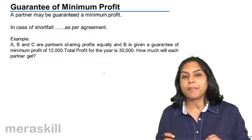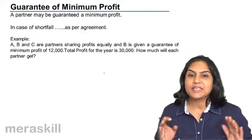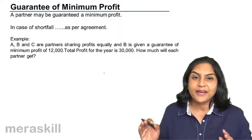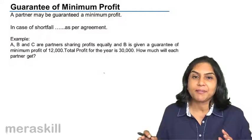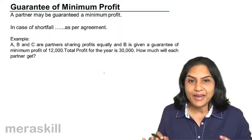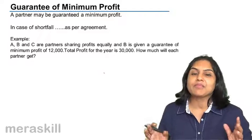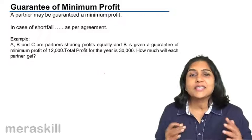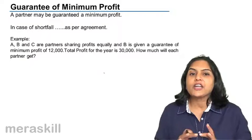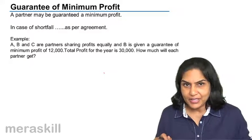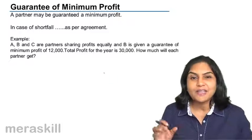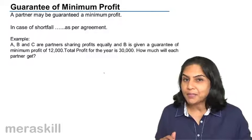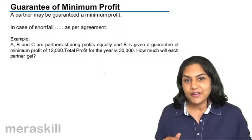Sometimes a particular partner guarantees the shortfall. For example, Mr. X says any shortfall in Mr. Z's guaranteed profit amount, he will bear that loss. Other times, the shortfall is borne by the other partners in some agreed ratio. It all depends on the agreement. If nothing is mentioned, we assume the shortfall is met by the other partners in their profit-sharing ratio.